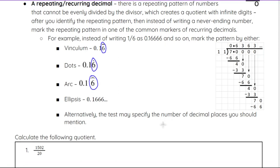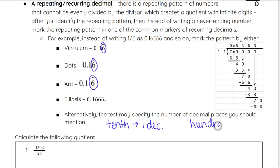Alternatively, the test may specify the number of decimal places you need based on what they want the answer to be — maybe one decimal place or two decimal places. A quick review: if they say the nearest tenth, that's one decimal place. If they say the nearest hundredth, that's two decimal places. Then thousandth, ten thousandth, so on and so on.